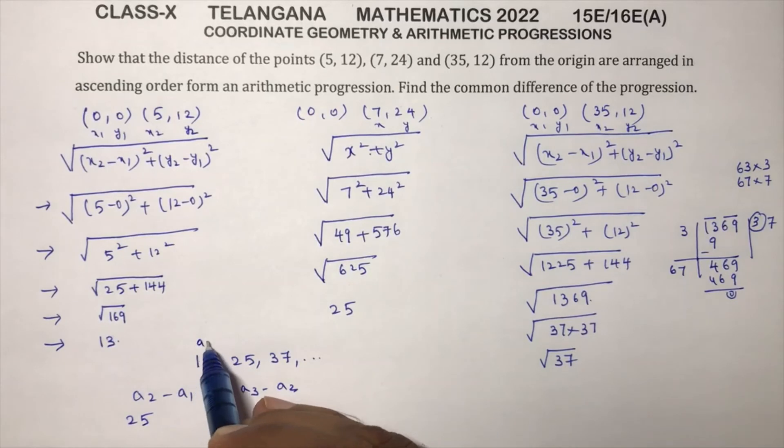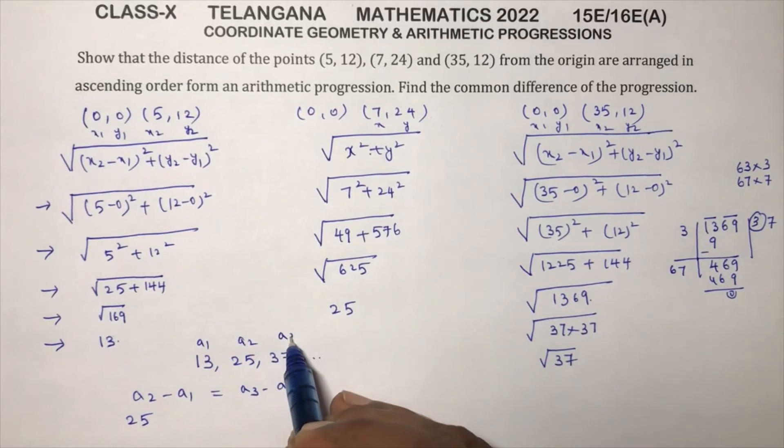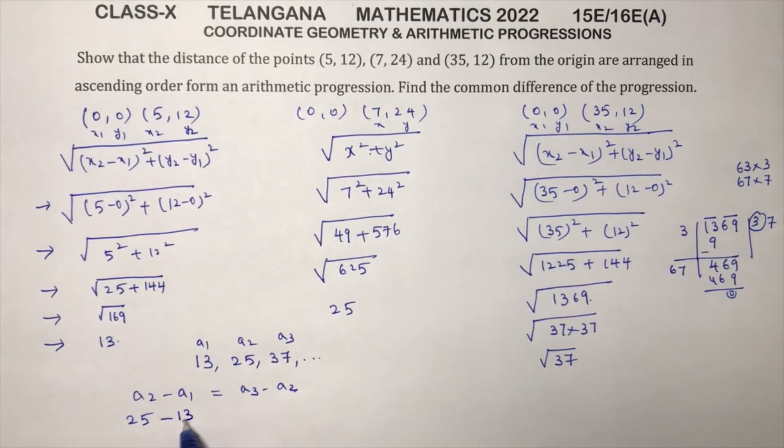So a1, a2, a3: 25 minus 13, 37 minus 25. 25 minus 13 is 12, so 37 minus 25 is also 12. So it forms an AP.